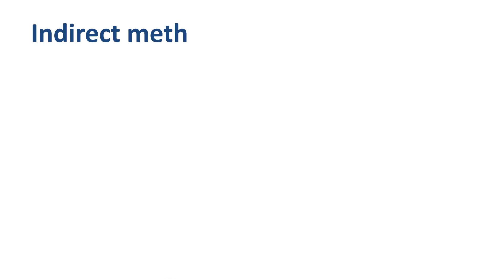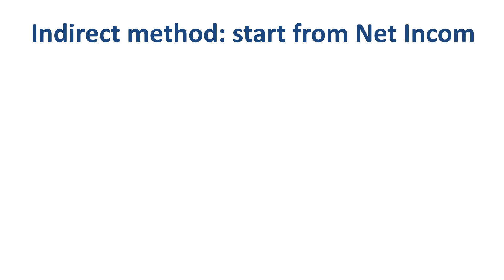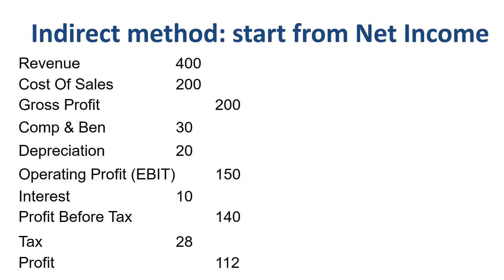When you use the indirect method, you start off with net income, or net profit. You can find net income in the P&L, the profit and loss statement, which could also be called the income statement. It is the bottom line of the income statement. In this example, net income is 112.